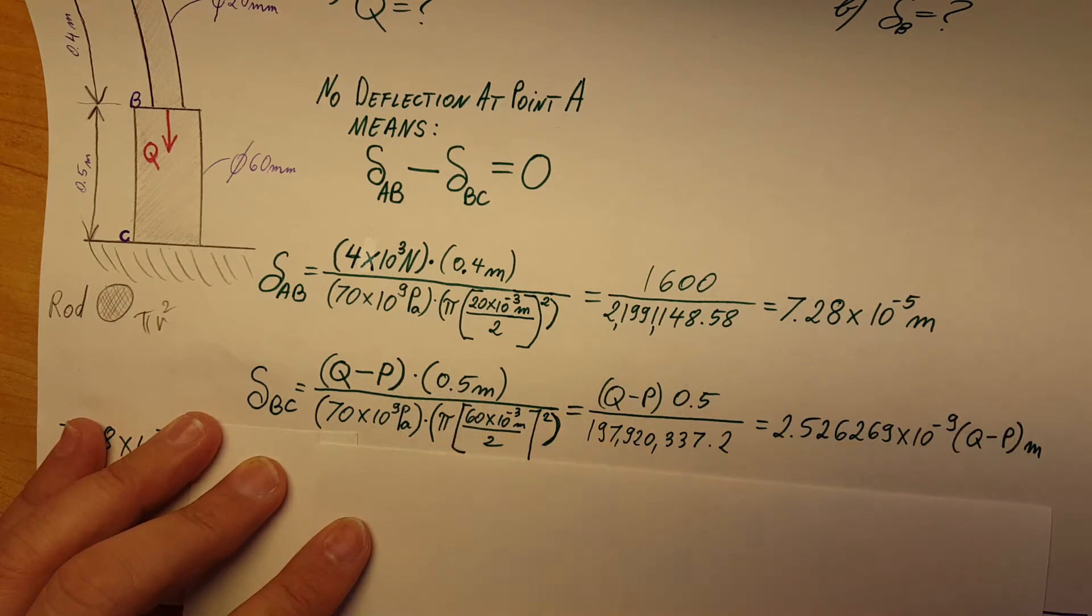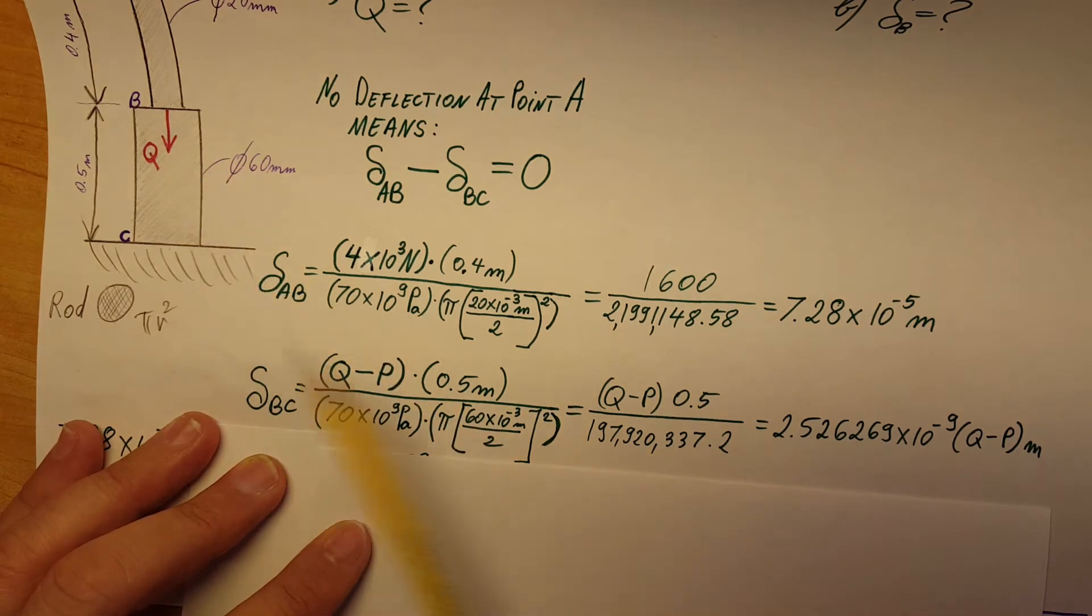We don't know it, it's a variable. Everything else we do know, but just for the sake of simplicity, I didn't plug in the value of P. We know it, it's four kilonewtons, but I left it like this to show the numbers more clearly.